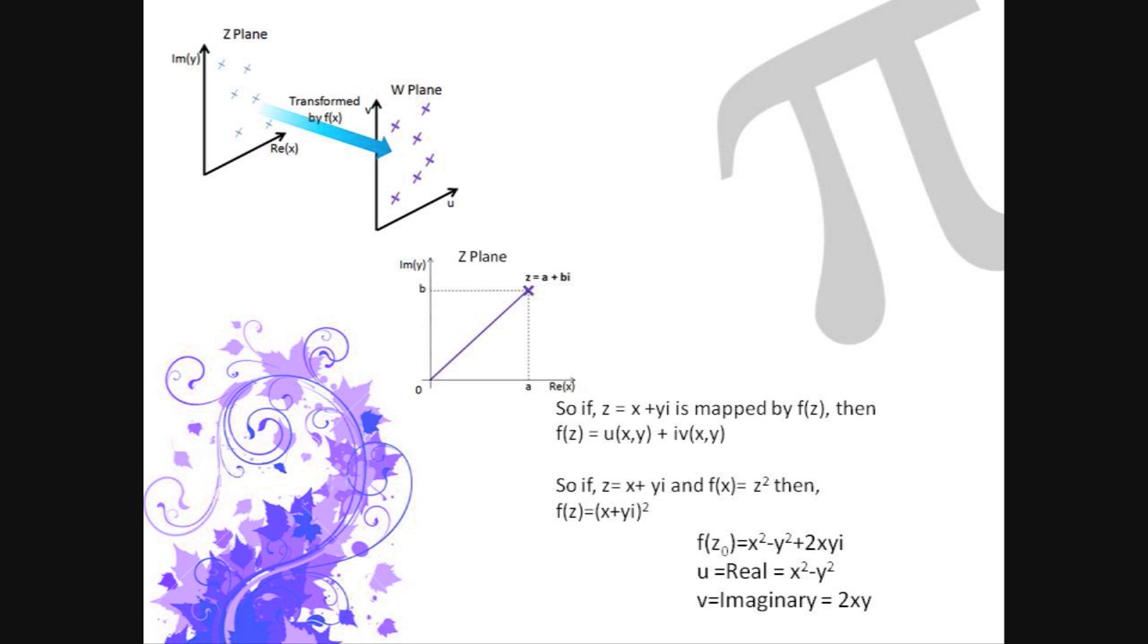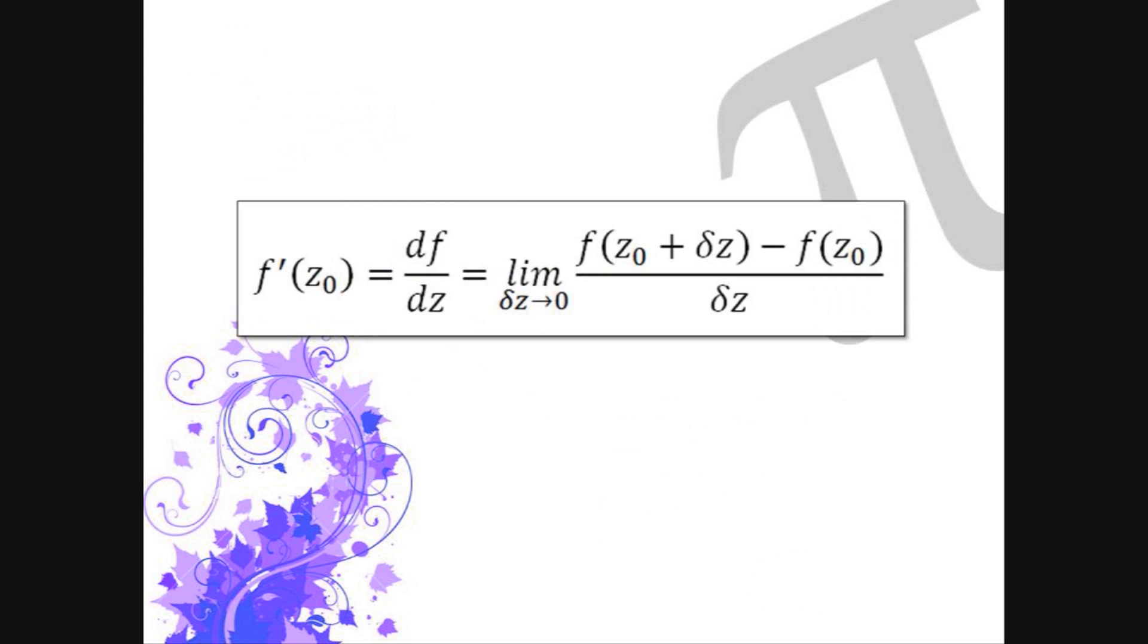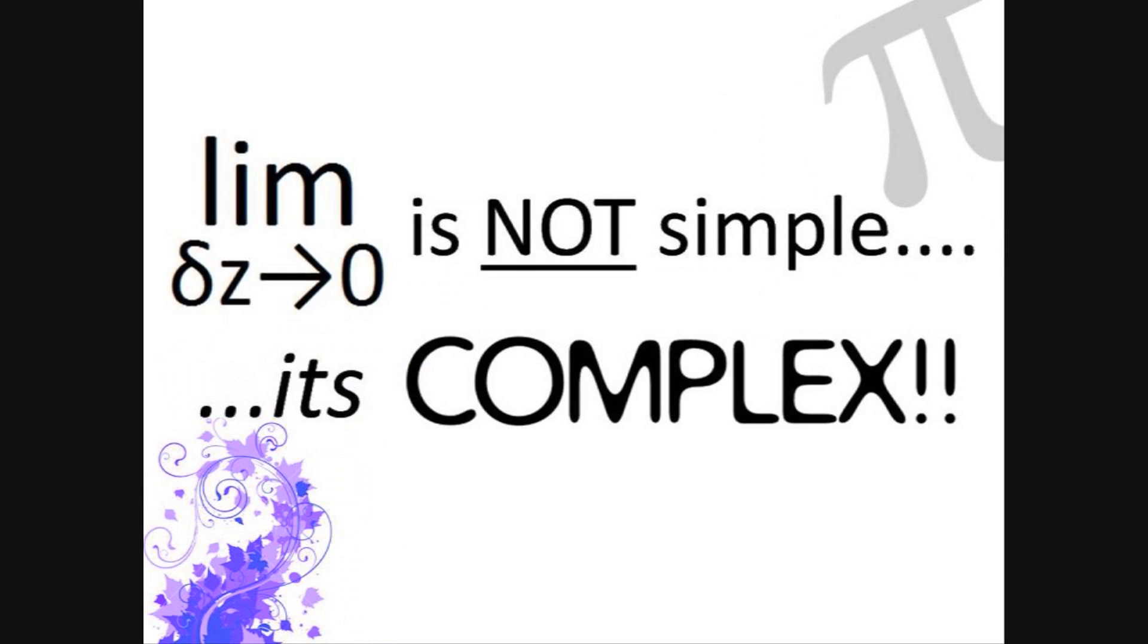Now applying the principle of differentiation from first principles to the complex plane, the derivative of f of z0 can now be expressed as f dash of z0 at the limit of delta z tends to zero of f of z0 plus delta z minus f of z0 all over delta z. But the important thing to remember here is that the limit as delta z tends to zero is not simple. It's complex!